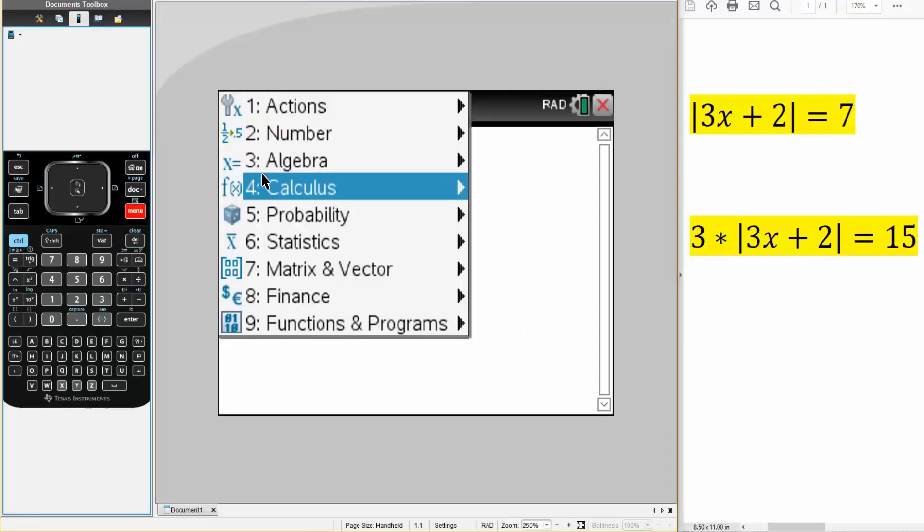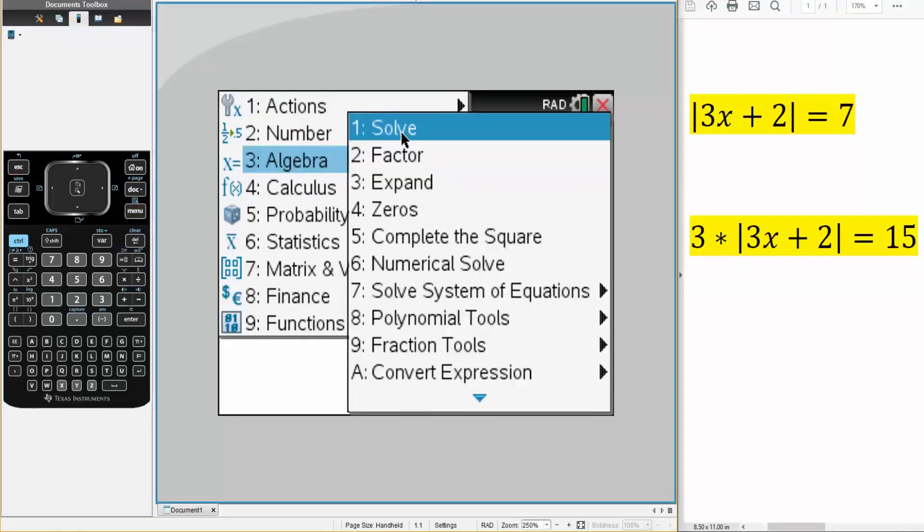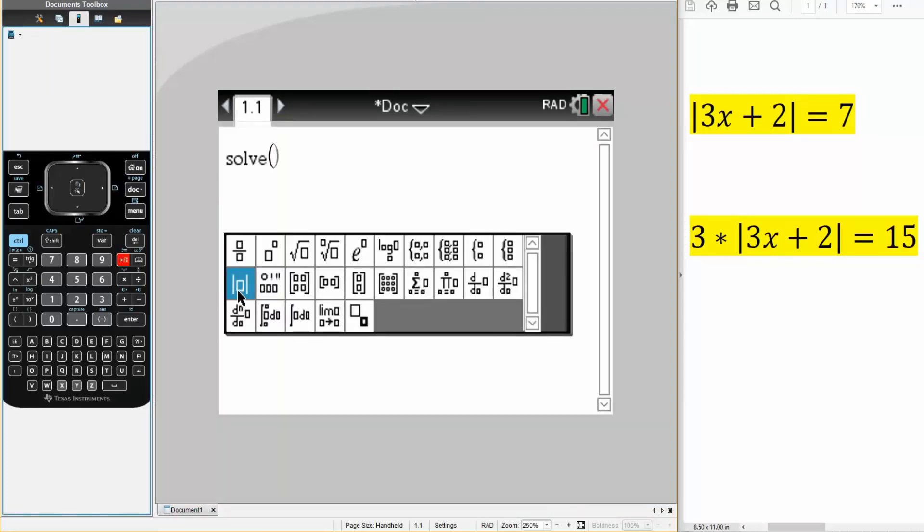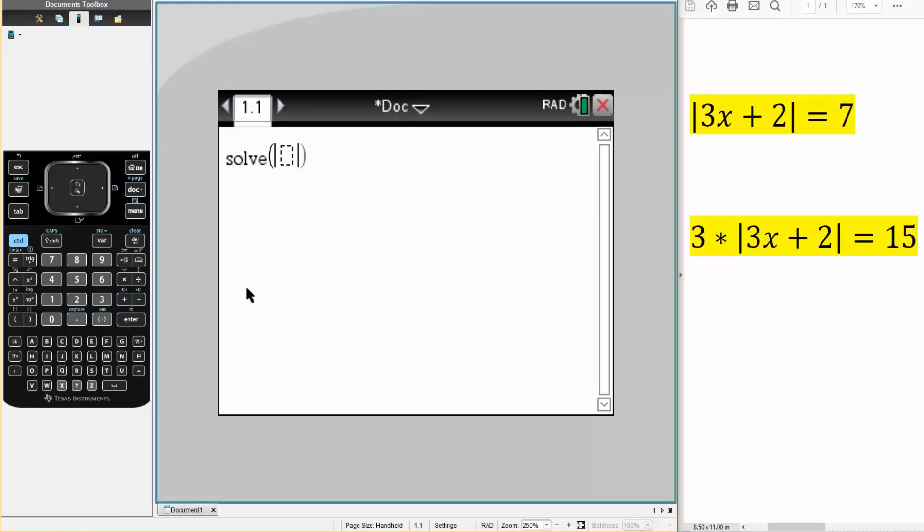So we'll hit Menu, Algebra, we'll hit Solve. Next, we will hit this icon right here, hit this symbol right here, the absolute value symbol, and write what we have.